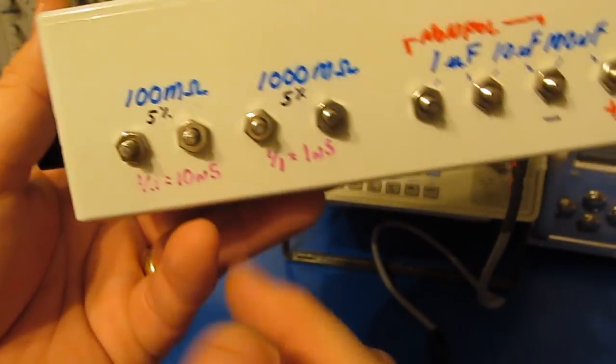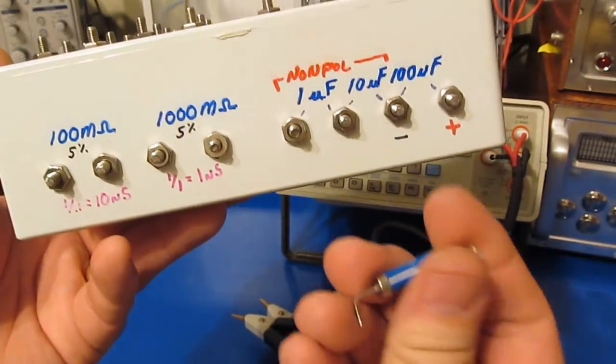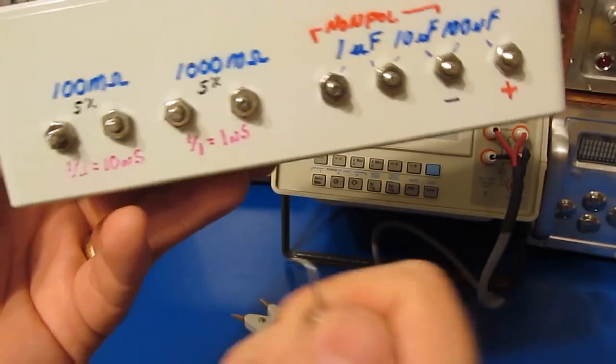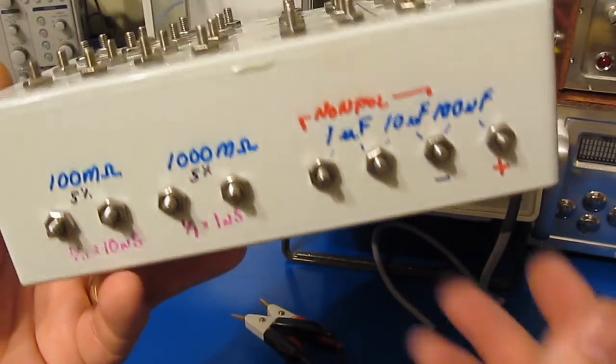For the 1 giga ohm and the 100 mega ohm, these are a KDAC part and they look similar to this. Not quite as good quality. These are both 5% parts.